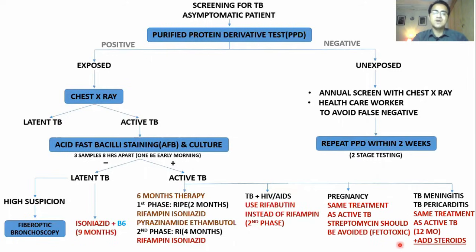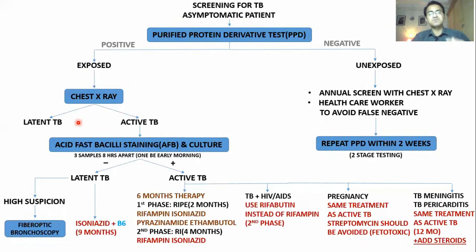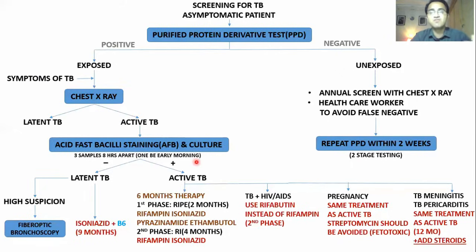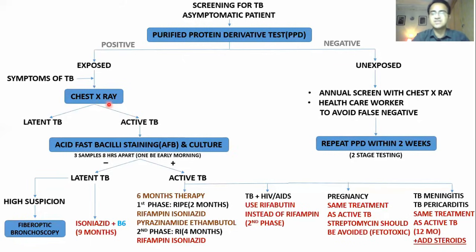To recap: for an asymptomatic patient you do PPD testing, then chest X-ray to see whether they have active or latent TB. For a symptomatic patient — one who comes with hemoptysis, cough, fever, night sweats — you directly do chest X-ray and acid-fast bacilli staining and culture. You do not have time to wait 48 to 72 hours for PPD induration to form, so you go directly for chest X-ray and AFB staining and culture.